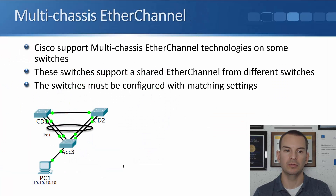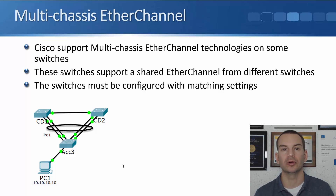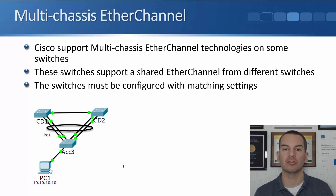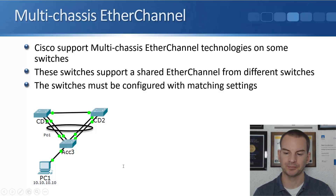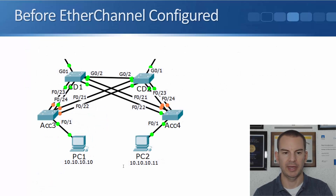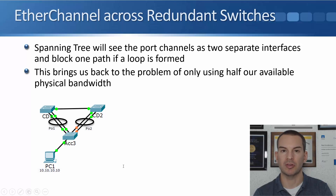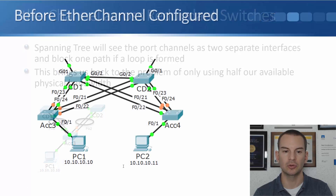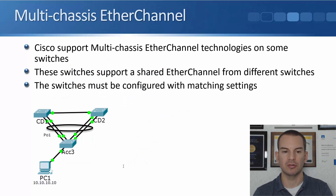Going back to the slides, there is a way to get this configured so that we are actually forwarding on all of our physically connected uplinks, and the way we do that is with multi-chassis EtherChannel. Some switches support that. When we configure it, the switches support a shared EtherChannel from different switches. Normally we would have two separate port channels — one going up to CD1 and another going up to CD2 — but when those core distribution layer switches support multi-chassis EtherChannel, I can do a single port channel going to both of them.